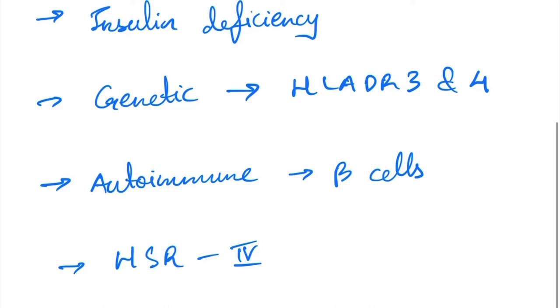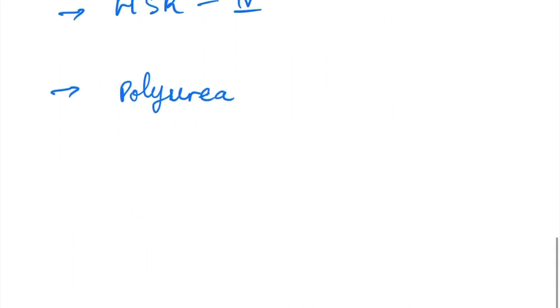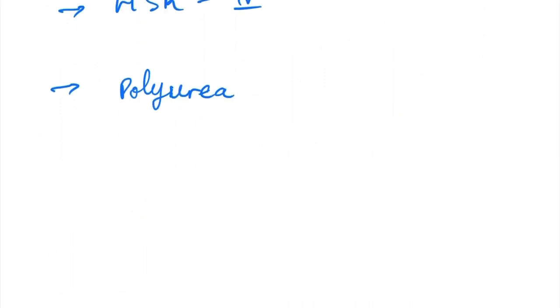The main symptoms include polyuria. Since we have excess amounts of glucose in the blood, we need to excrete it in the form of urine, so there's also glycosuria.